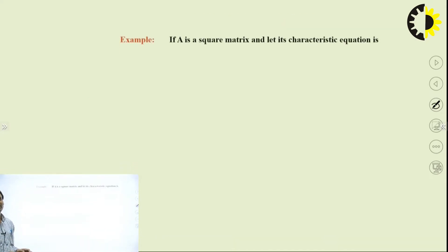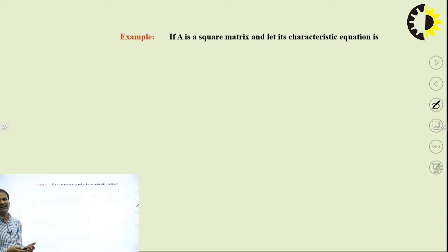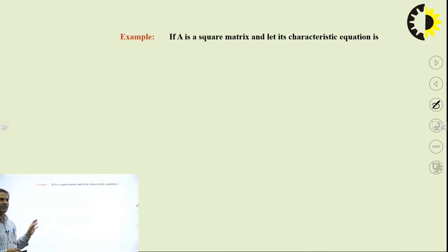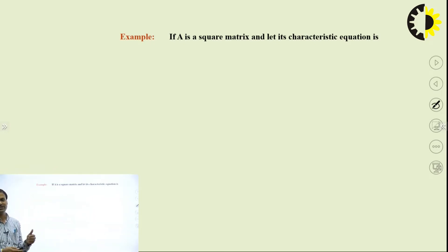In your AKTU curriculum, there are various questions related to the Cayley-Hamilton theorem always asked in previous examinations, and it carries a maximum of 10 marks. You can have a question of 10 marks in your end semester examination of the first semester. The proof is not part of your syllabus, so I am omitting the proof and will discuss solved questions based on the Cayley-Hamilton theorem.